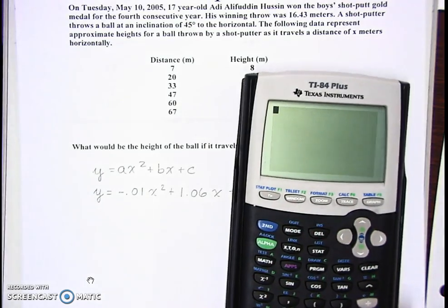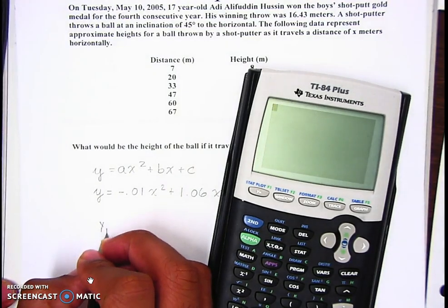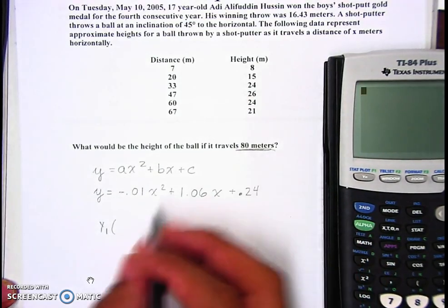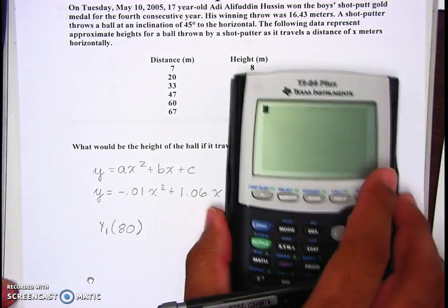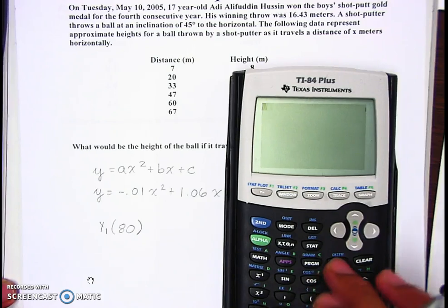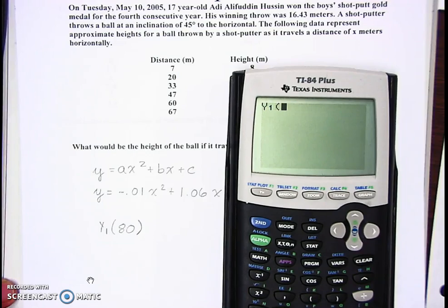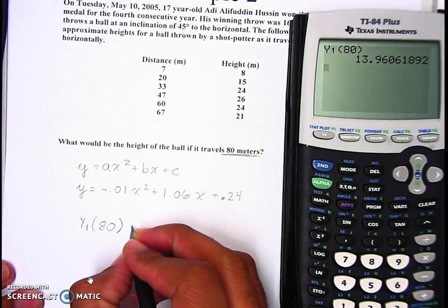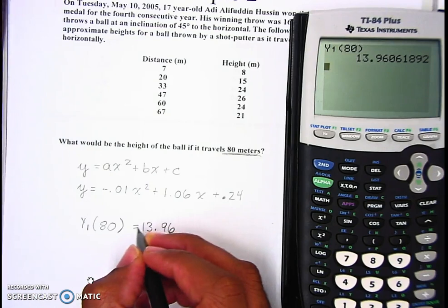So we do second, quit. We're going to do Y1, and it says 80 meters, so you put 80 right there. Second, quit, bars, go to the right, one, one, parentheses, 80, close. Round two decimal places.